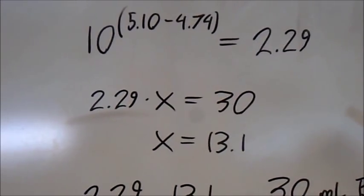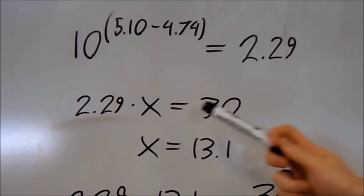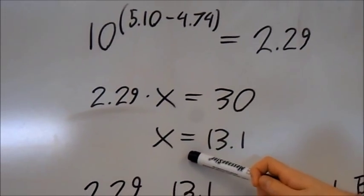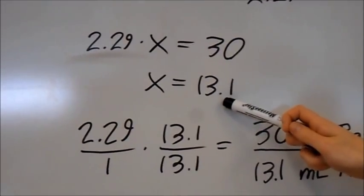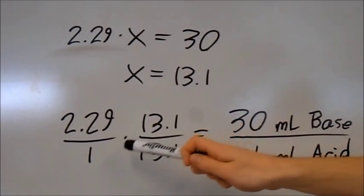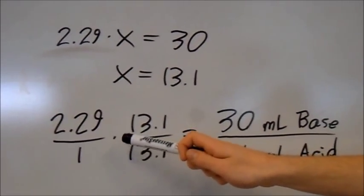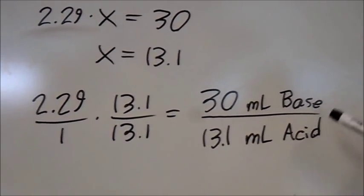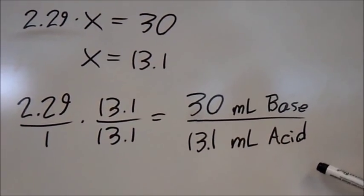To find out what I need to multiply by to get 30 milliliters of base, I simply set up an algebraic equation and solve for x. This multiple is used into the ratio of 2.29 over 1, resulting in 30 milliliters of base over 13.1 milliliters acid.